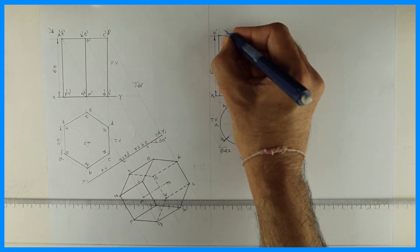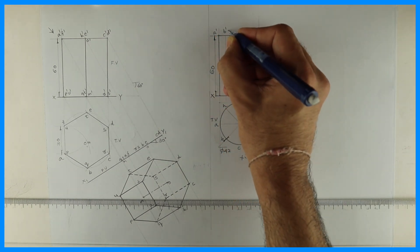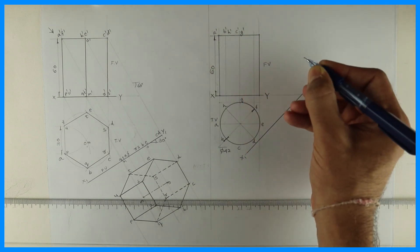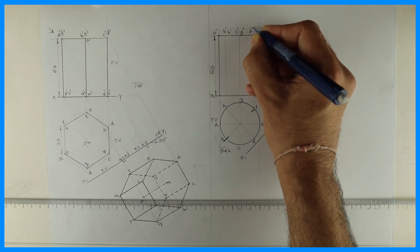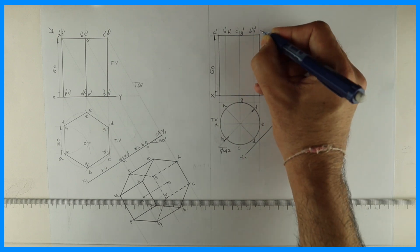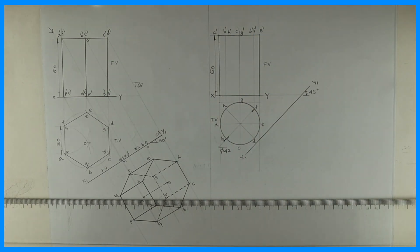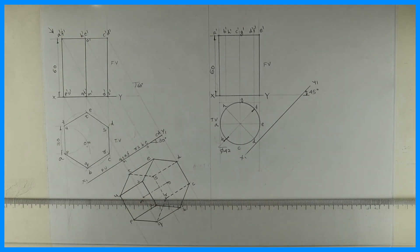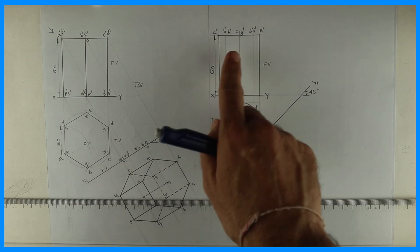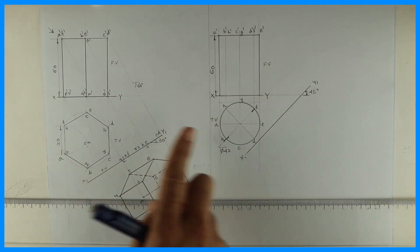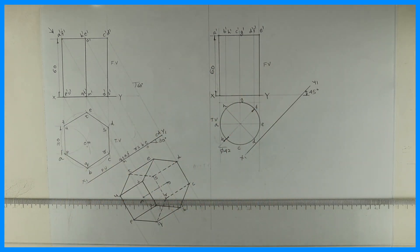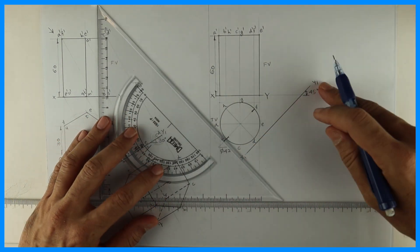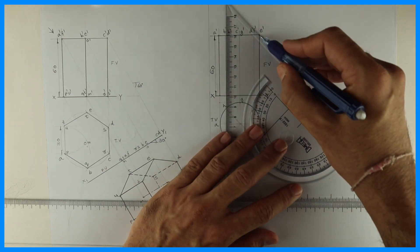I'm writing points a, b, c, d, e, f, g, h. If you notice, a circle doesn't have any edges, so that's why we are dividing into eight parts — all these parts will help us in construction. In a prism we have edges; here there are none, so we are assuming generators and drawing them. This is X1Y1.